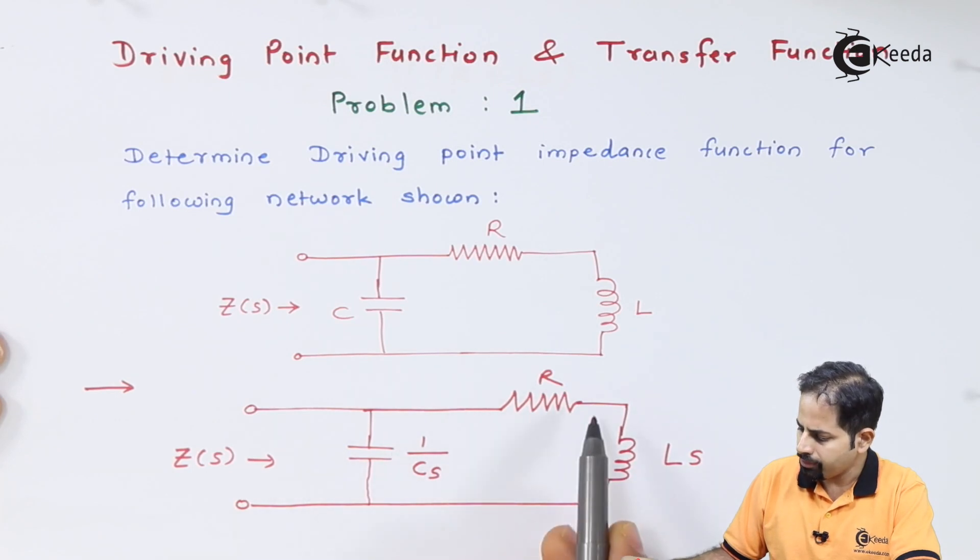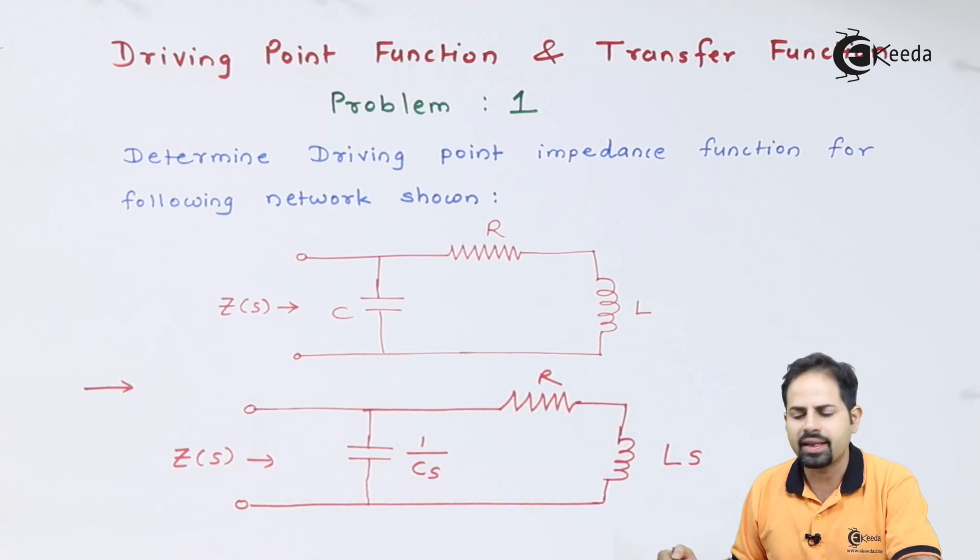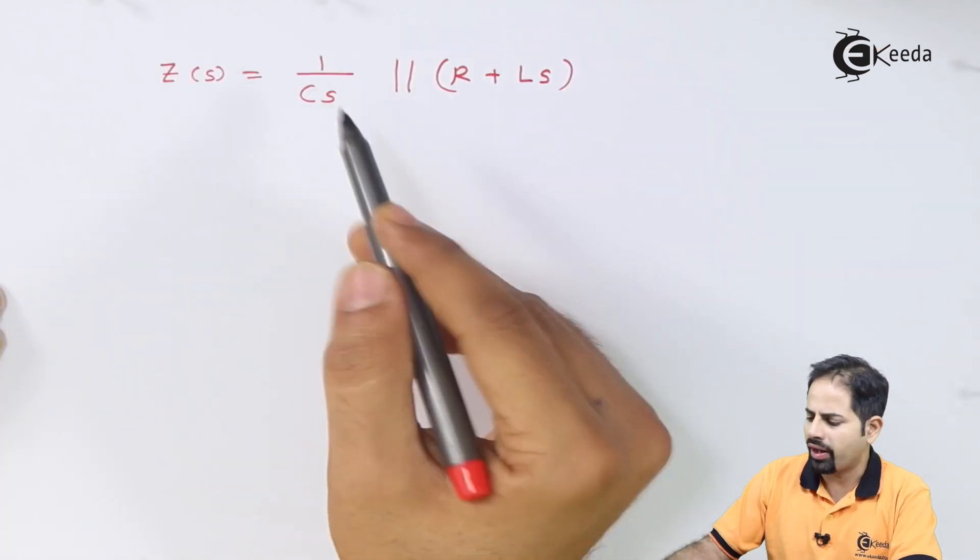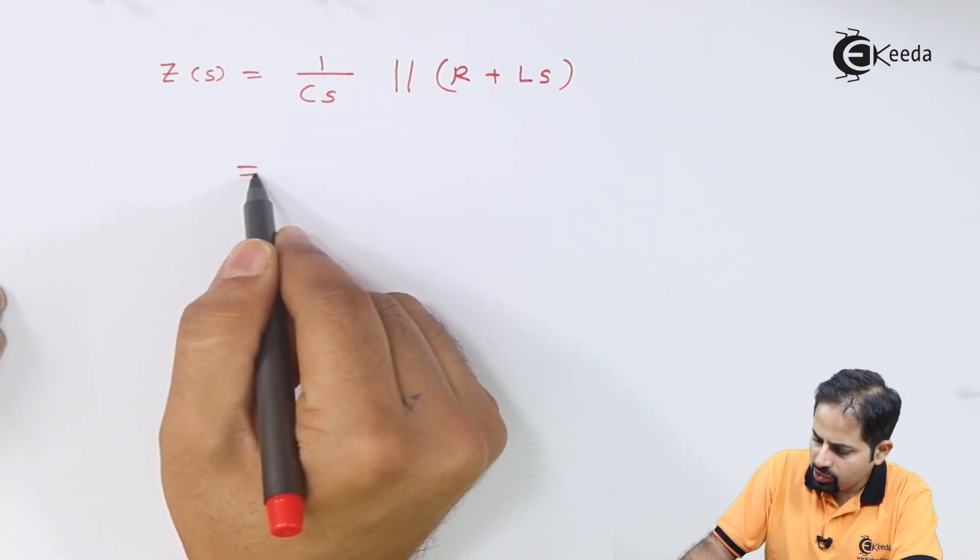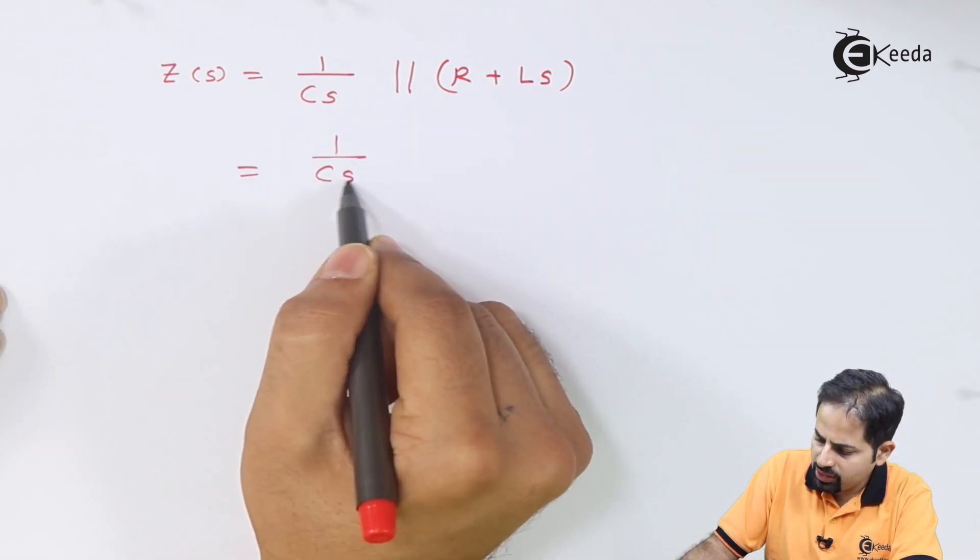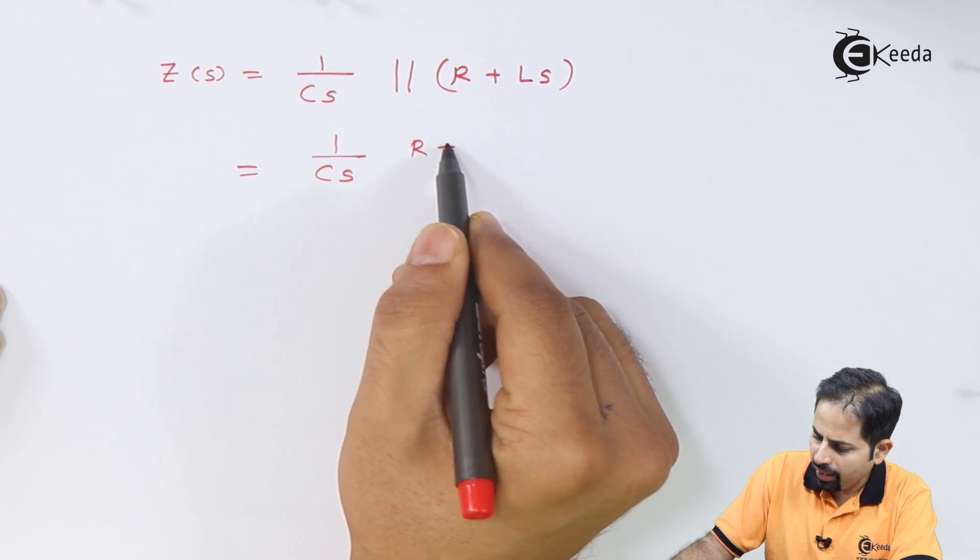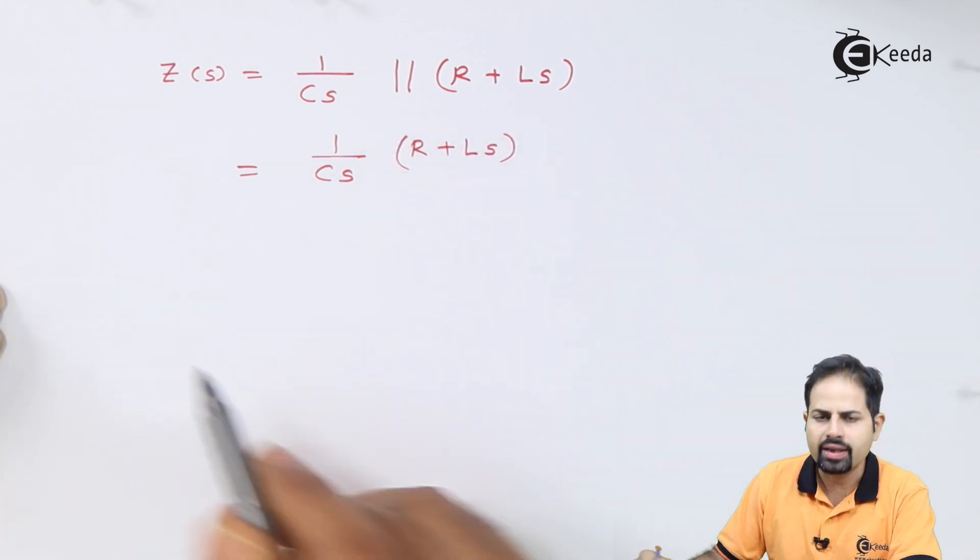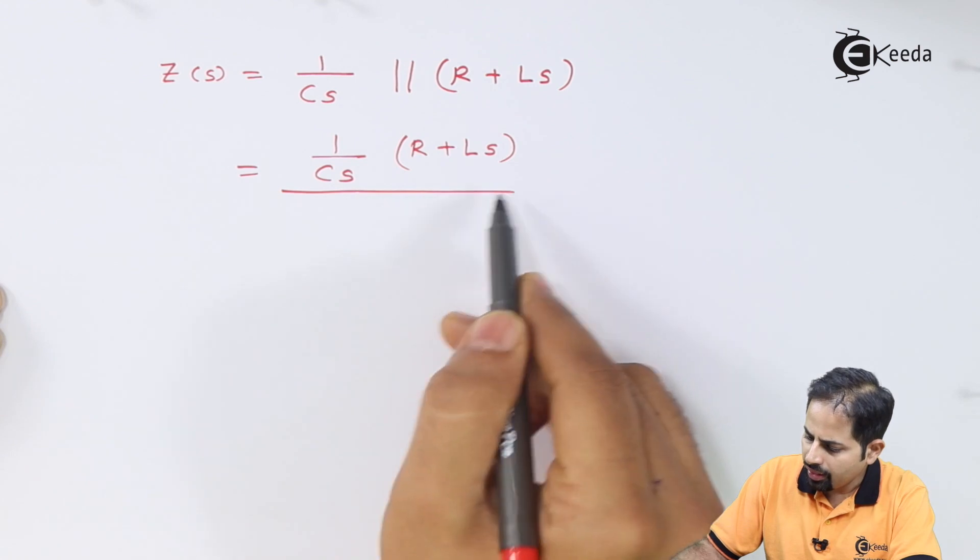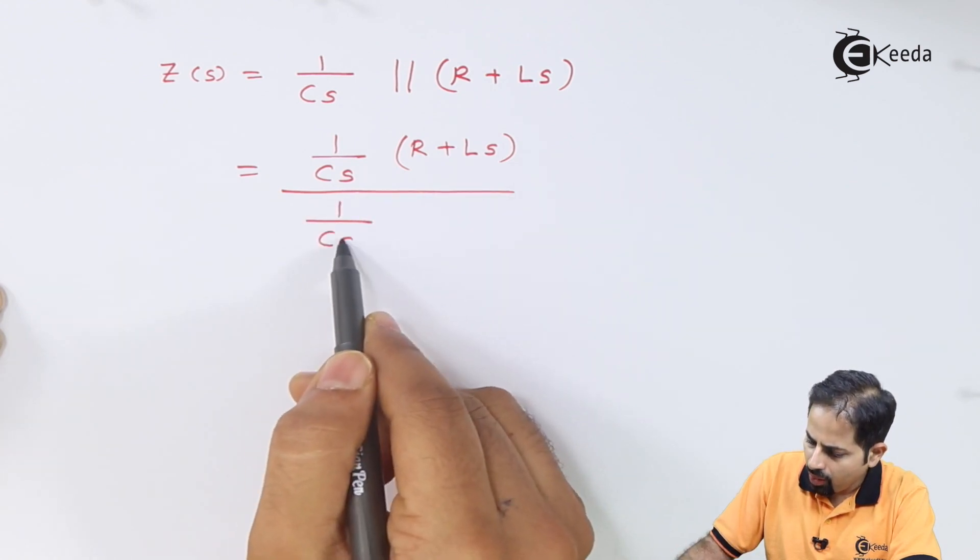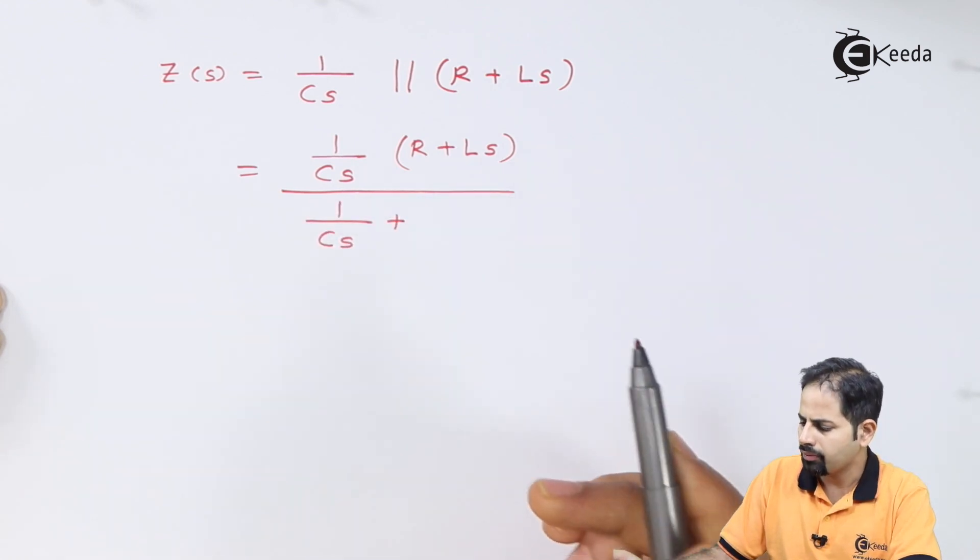1 upon Cs is in parallel with R plus Ls. Now it is very easy job to find the parallel combination. Because now it is going to be 1 upon Cs multiplied by R plus Ls divided by 1 upon Cs plus R plus Ls.